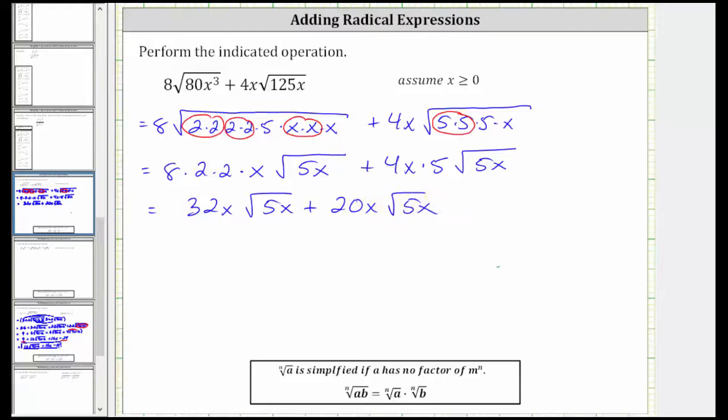Now that we've simplified the square roots, notice how we do have like radicals because both terms contain the same square root factor. Which means we can add the expressions because 32x plus 20x is equal to 52x. The simplified expression is 52x square root of 5x. I hope you found this helpful.